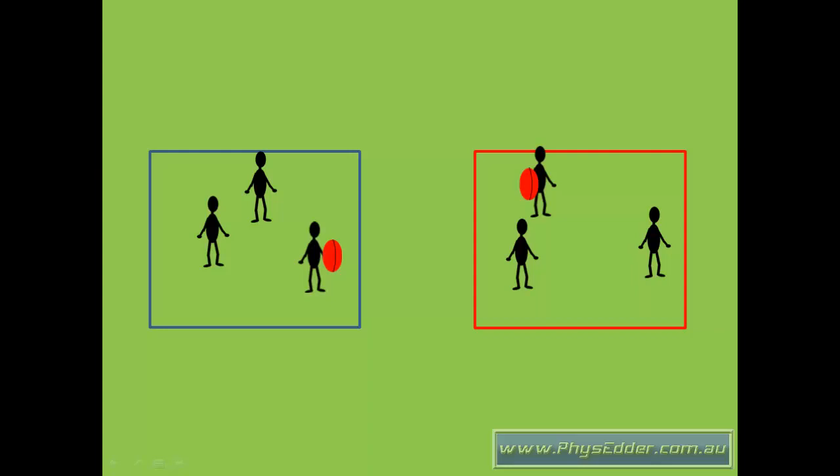So again, when they're ready, I'd say, ready, set, kick. They kick the ball into the opposing team's area, and again, the red team have marked theirs, but the blue team dropped theirs, and it actually landed inside their area. So therefore, the blue team would pick up a penalty point.